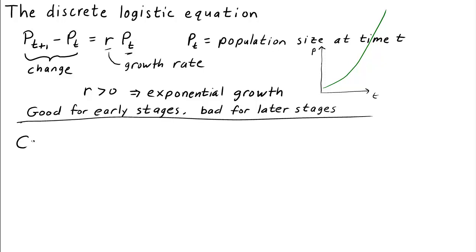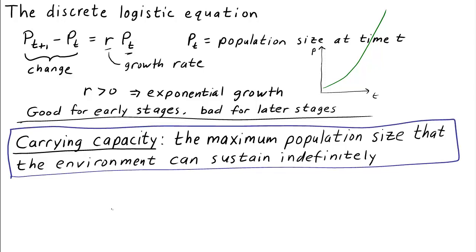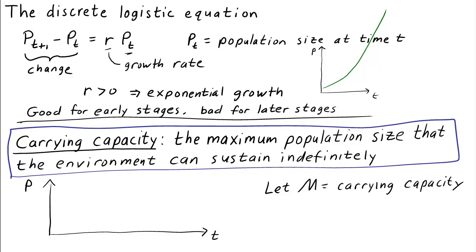To model these environmental constraints, we can introduce something called a carrying capacity. The carrying capacity is the maximum population size that the environment can sustain indefinitely. As a population reaches its environmental limits, its growth slows down. If we let m be the carrying capacity, then if we plot population size versus time, the population size won't grow beyond m. Initially the population will be small and grow exponentially, but eventually the growth rate will slow down and the population size will approach the carrying capacity. If one started with a population size above the carrying capacity, the population size would decline and approach the carrying capacity from above.